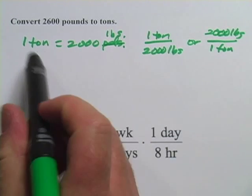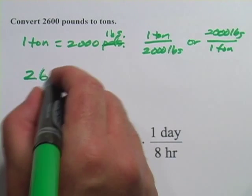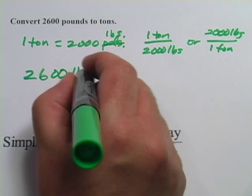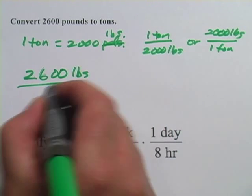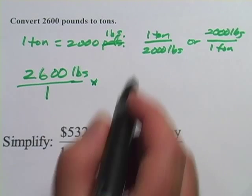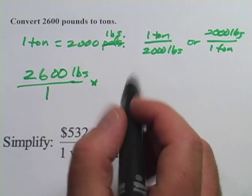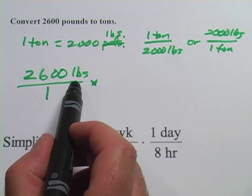Now we're ready to do this thing. It says convert 2,600 pounds to tons. So we're starting with the 2,600 pounds and then I'm going to write that as a fraction. What we do is we multiply this by this unit multiplier. The one I'm going to pick is the one that has pounds on the bottom because here I have pounds on the top.